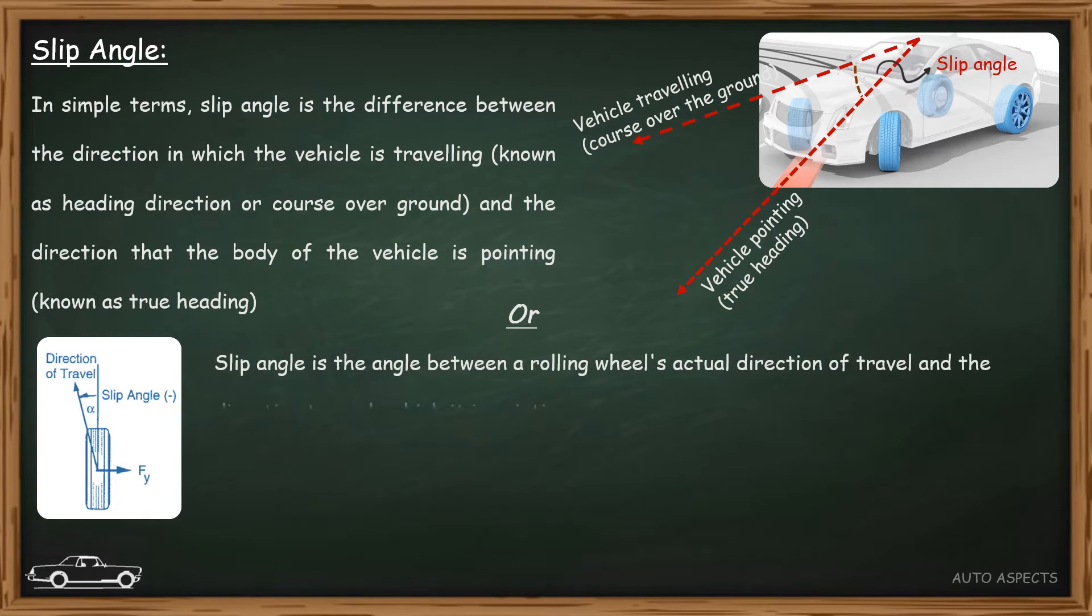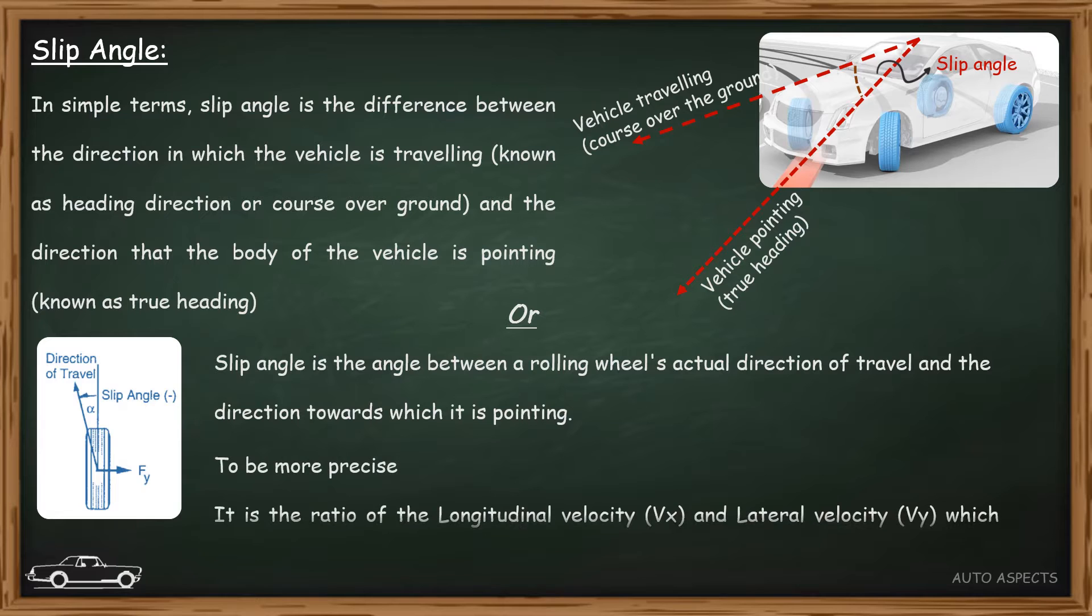To be more precise, consider a tire. Here the ratio of the longitudinal velocity vector vx and the lateral velocity vector vy forms an angle called slip angle. So this is how the term slip angle is defined.